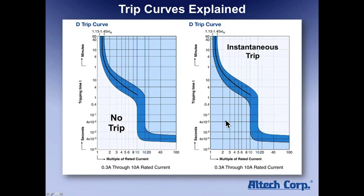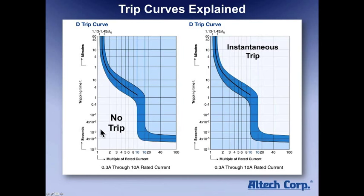That's why we have different trip zones. For example, you have a motor — if it's a 1 amp motor, it usually has an inrush current of 6 times rated current, so 6 amps. It's a real quick spike in the millisecond area, and it will not touch the curve, so it will not trip.